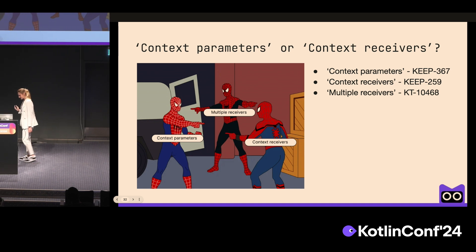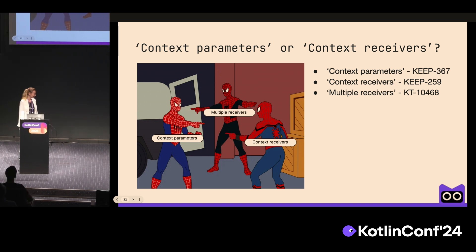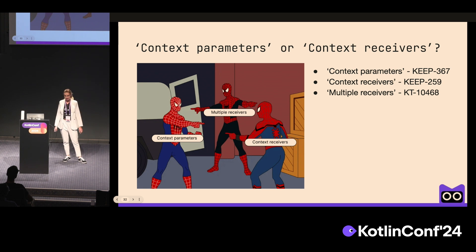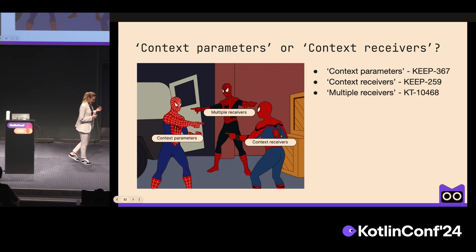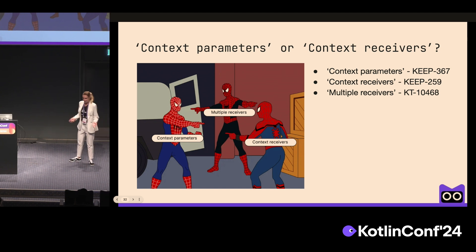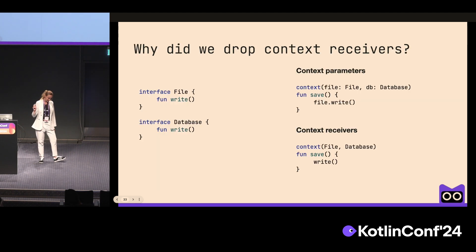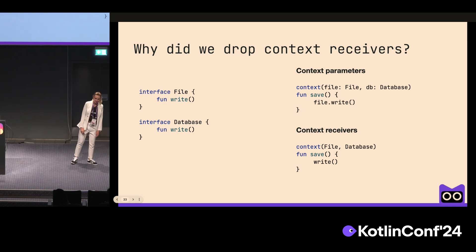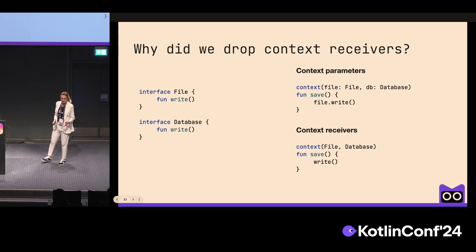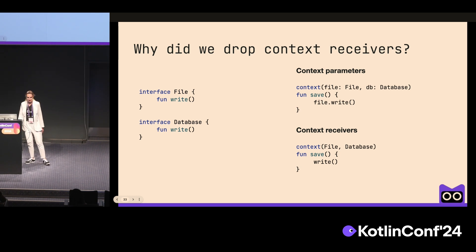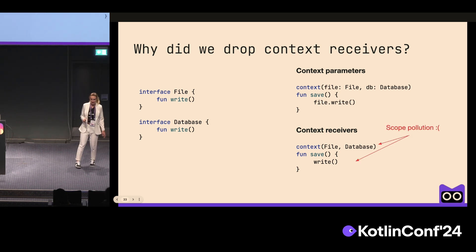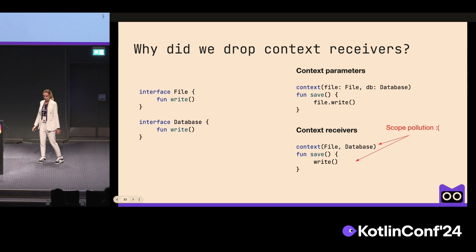Context parameters isn't actually a new feature — it's a very old feature request that has undergone two name rebranding: first it was 'multiple receivers', then 'context receivers', and now 'context parameters'. The most popular question is why we dropped context receivers. The main objection to the previous design was potential scope pollution: having too many functions available in scope makes it difficult to find the right one and harder to establish where a certain member is coming from. We believe context parameters provide a better first step in understanding how implicit context resolution fits in Kotlin without that issue.